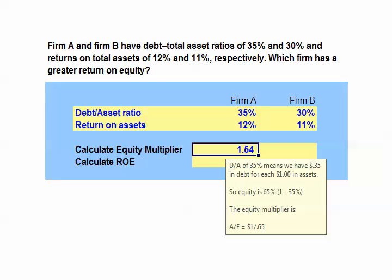So we can calculate the equity multiplier, or asset to equity ratio, by taking the $1 in assets and dividing it by 0.65, and we get an asset to equity ratio of 1.54.